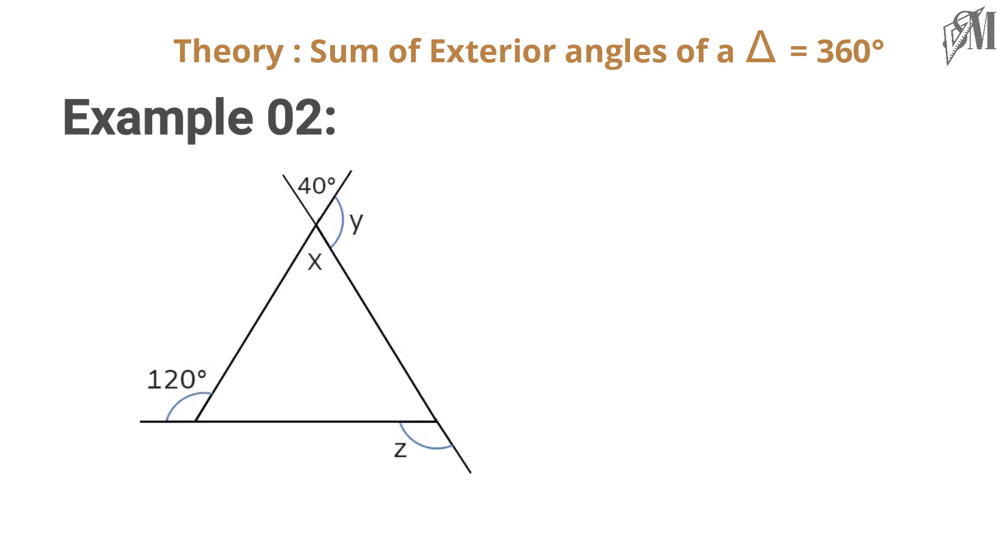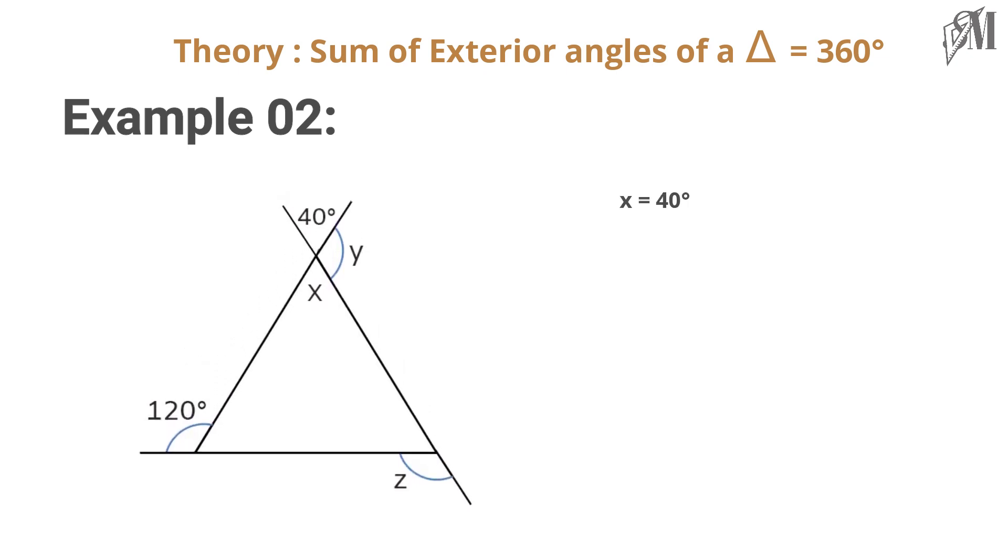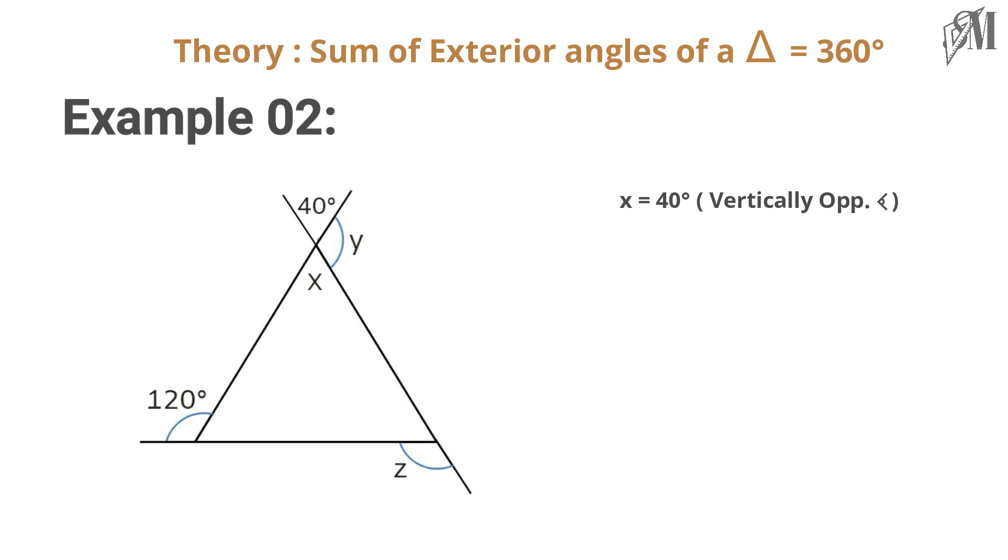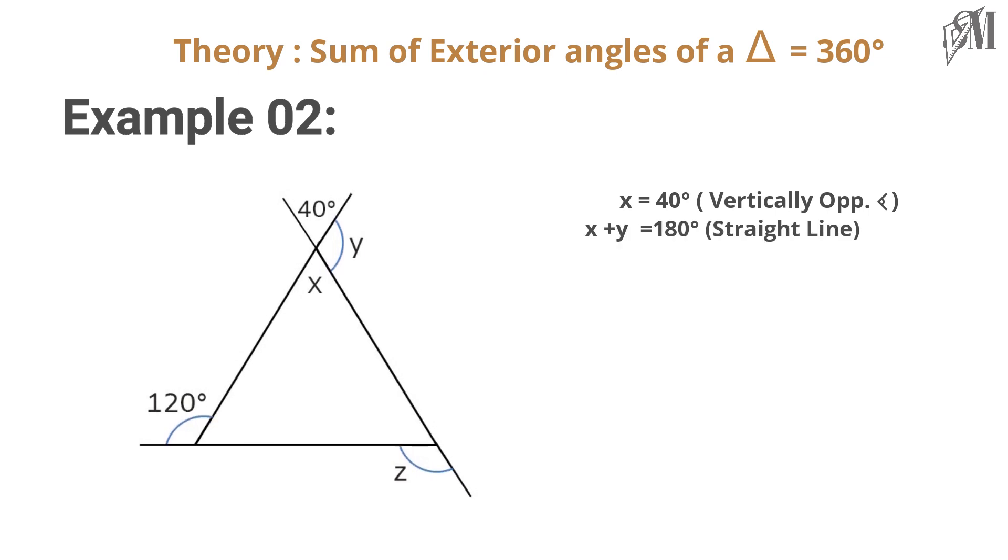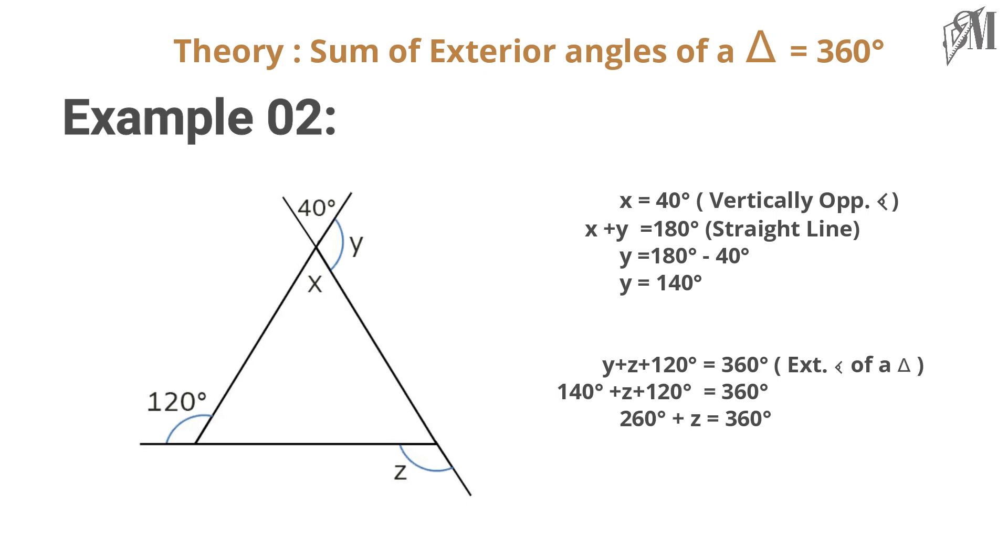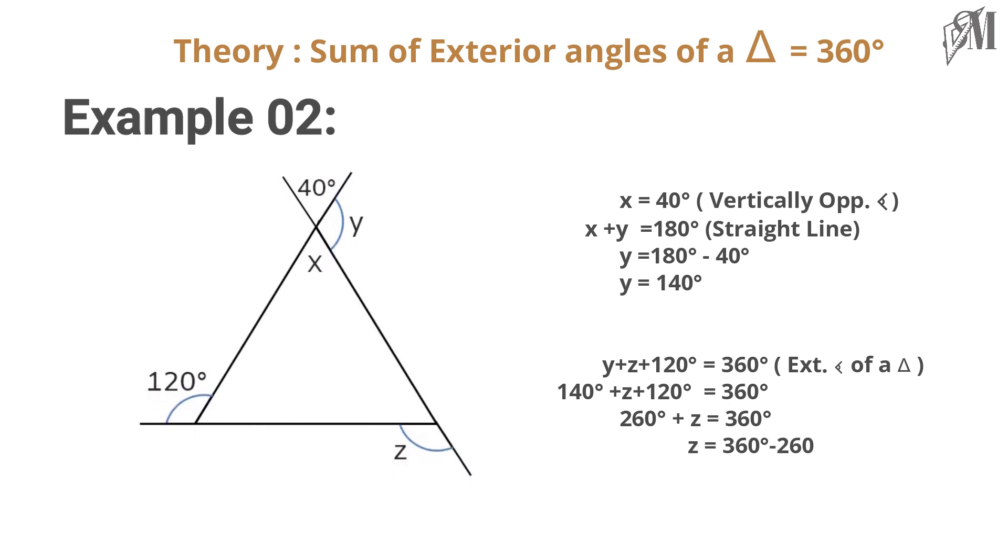40 degrees is vertically opposite to x, so x is equal to 40. Then x plus y is 180 because they fall on a straight line. That gives y is equal to 140. Now we can state 140 plus 120 plus z is equal to 360, and then z becomes 100.